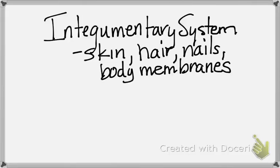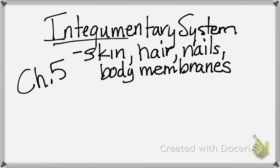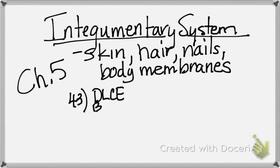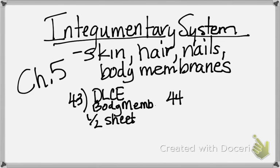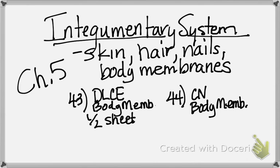We're starting up our new chapter, the integumentary system — chapter 5 in the textbook. The computers are down today so the notes are going to be rough. The integumentary system includes your skin, hair, nails, and body membranes. On page 43 of your interactive notebook you were supposed to do a DLCE of the body membranes, and today a half sheet was given to color.